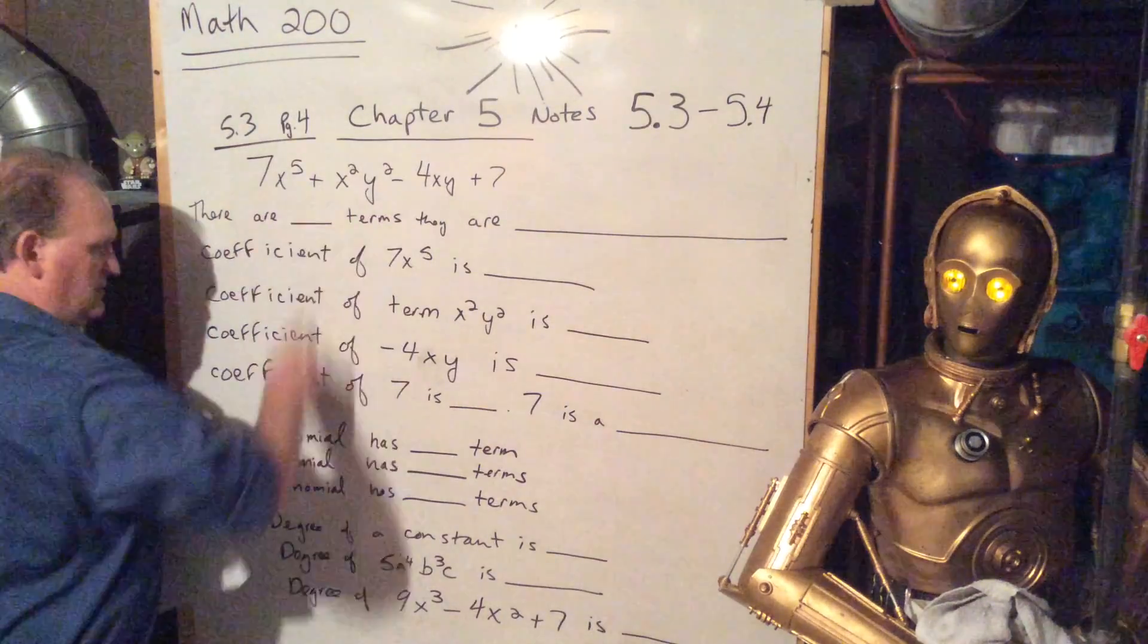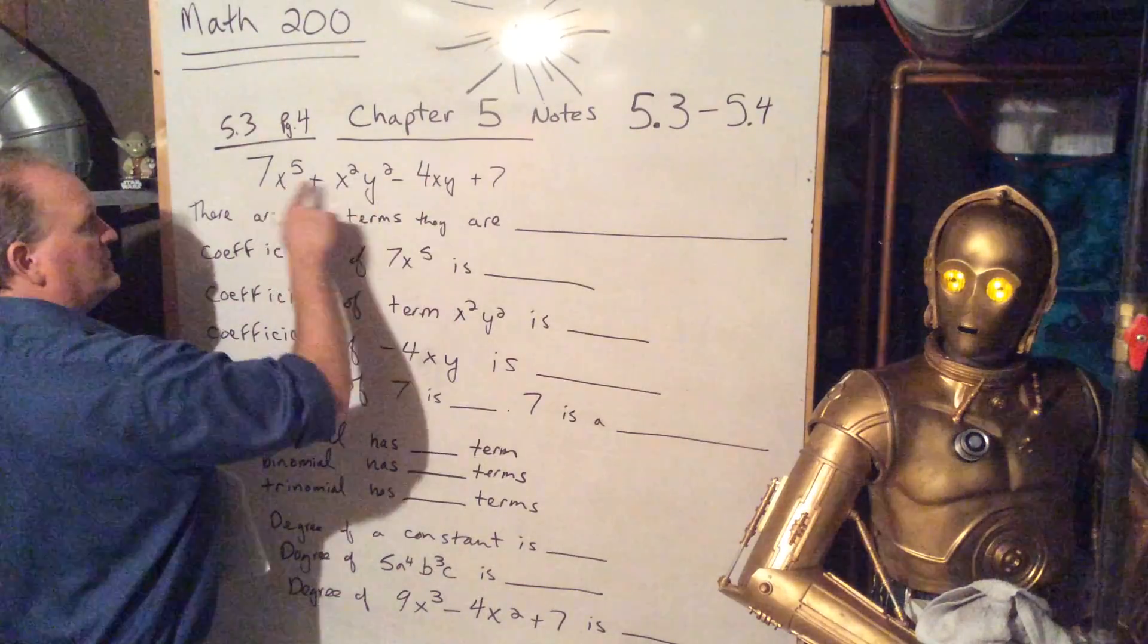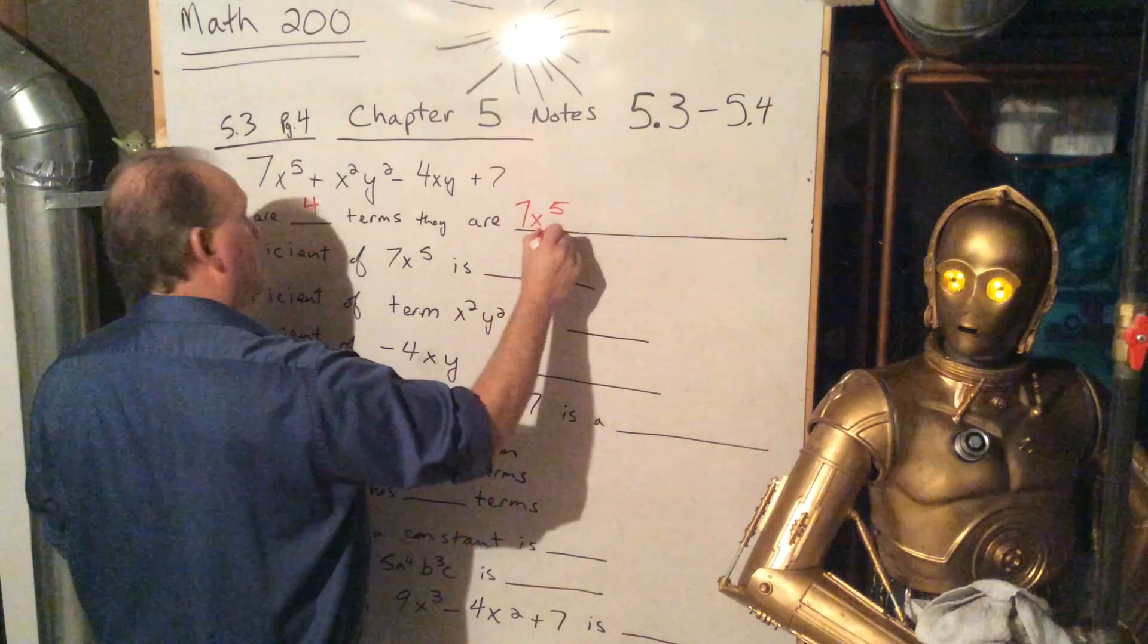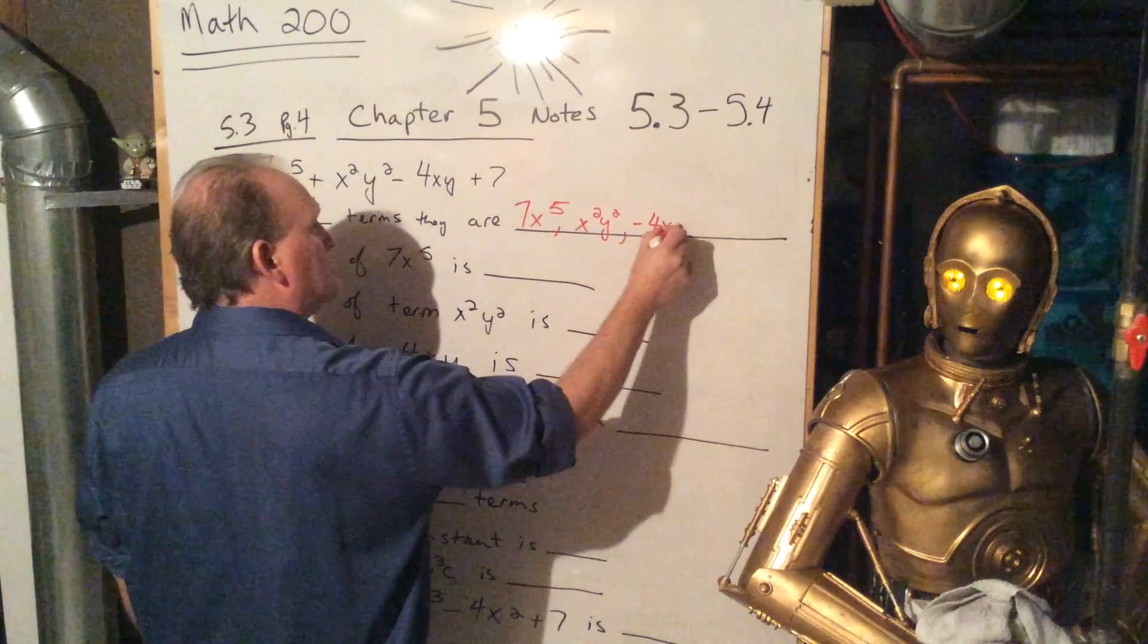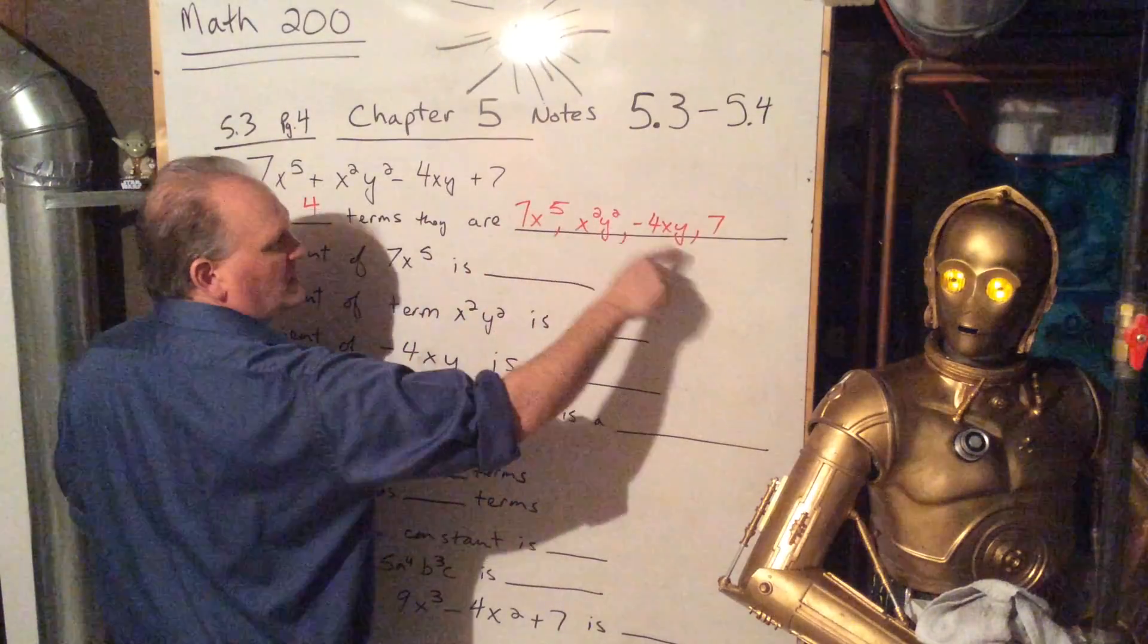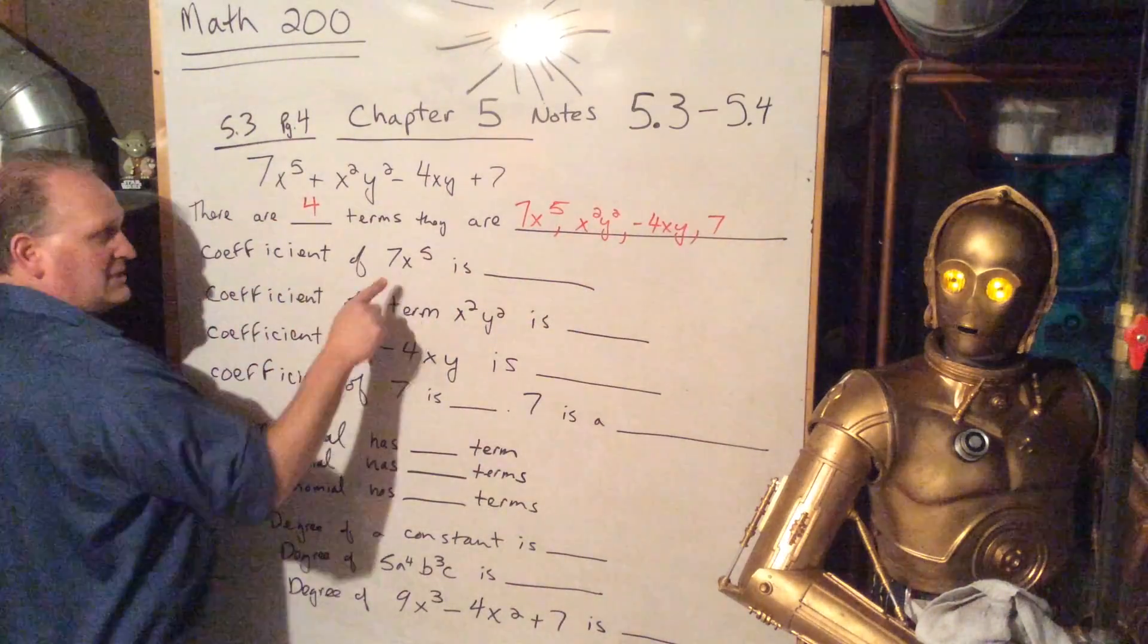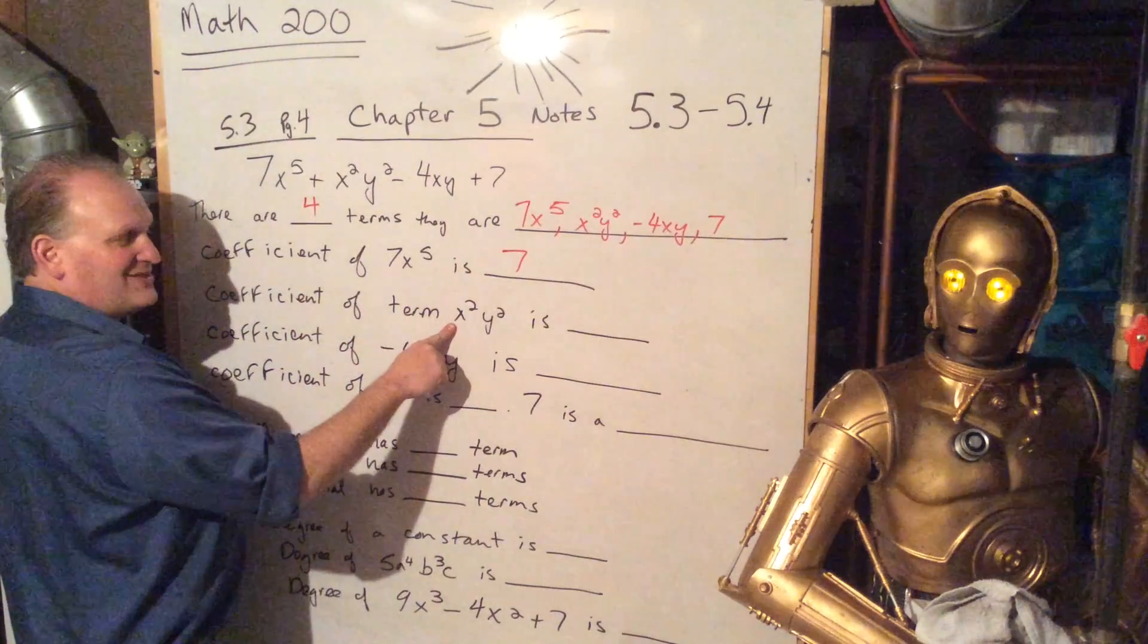So let's answer the fill in the blanks here. There are how many terms? On this one, there's 1, 2, 3, 4 terms. And they say, what are they? Well, they just want us to list them out. 7x to the fifth, x squared y squared, negative 4xy, and 7. There's problems like this on the online work. So remember to put commas in between. Don't put the plus in front of it, like the plus 7 or the plus x squared. They just want a list of the terms.